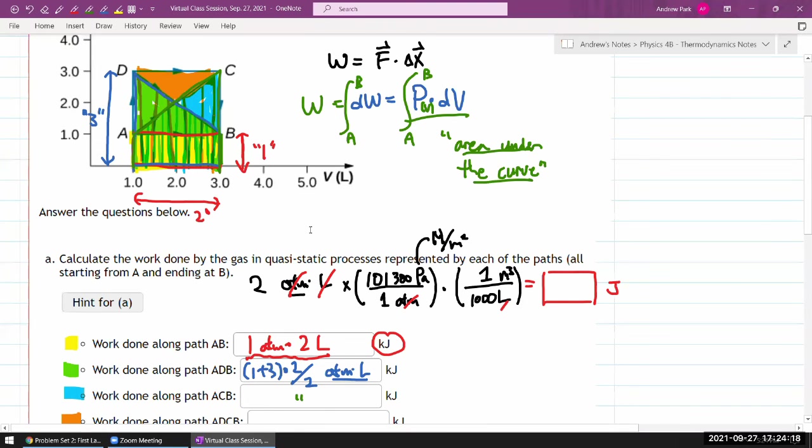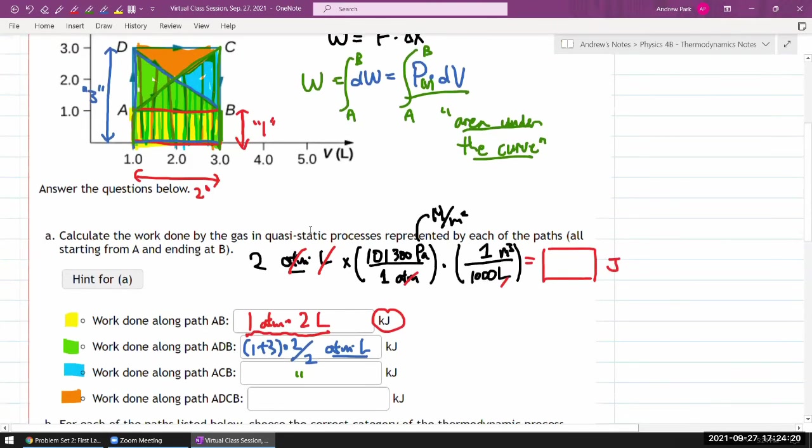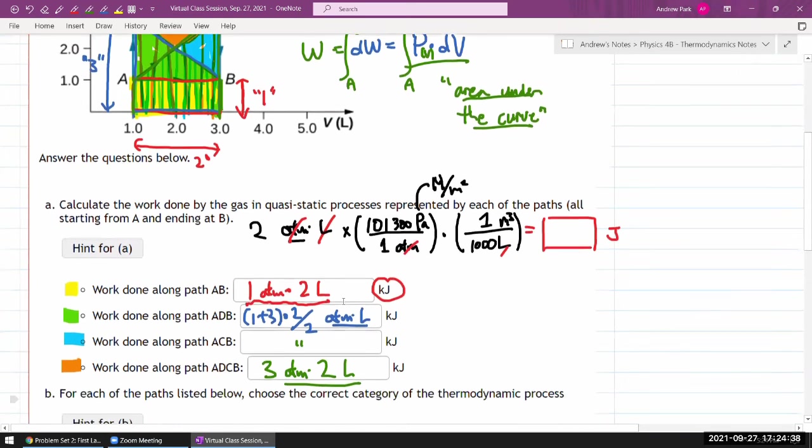ADCB is easier. It's a rectangle again. So it's just going to be 3 atmosphere times 2 liters. So 3 atmosphere times 2 liter. Again, convert the unit to kilojoule for correct answer or answer that this term will recognize as correct.